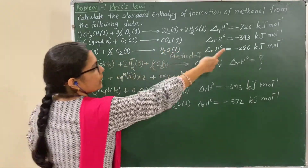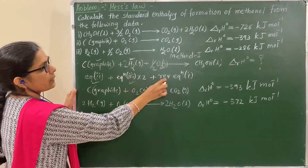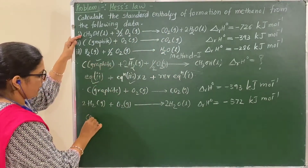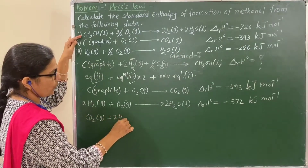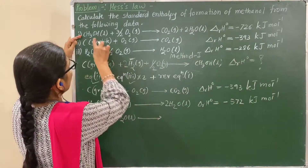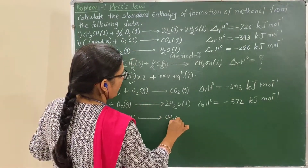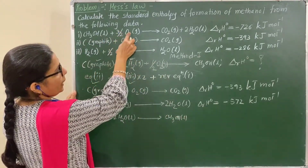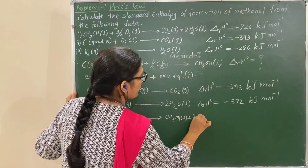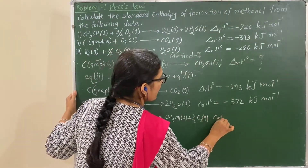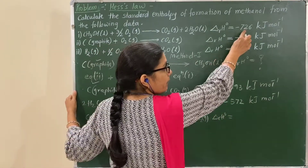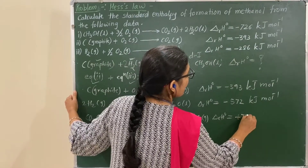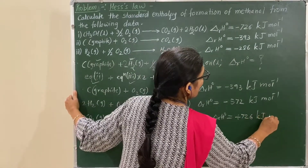Now the reverse of equation number 1: CO₂ gas + 2H₂O liquid → CH₃OH + O₂. The magnitude of ΔH remains the same but the sign is opposite because the reaction is reversed. Therefore the enthalpy change is +726 kJ/mol.